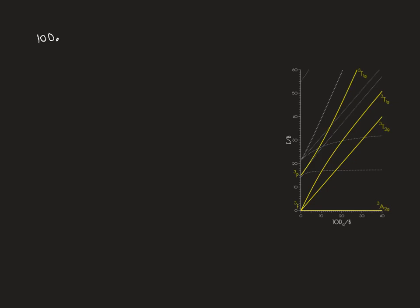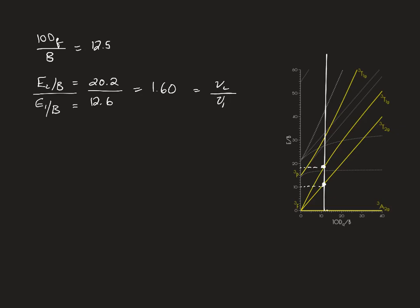We now know that the value for 10Dq/B is equal to somewhere between 10 and 15. So we're going to guess a value now of 12.5. Doing that vertical line originating from 12.5, we cross the triplet T2g state here and the triplet T1g state here. So E2/B at this point is equal to 20.2, E1/B is equal to 12.6. Dividing those together, we get 1.60, which equals that ratio of ν2 over ν1 that we determined before. So we know that the 10Dq/B is equal to 12.5.